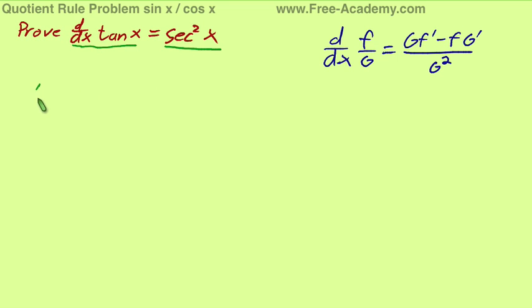As you know, the tangent of x equals sine of x over cosine of x. So if we find the derivative of tangent of x, we're going to be finding the derivative of sine of x over cosine of x.